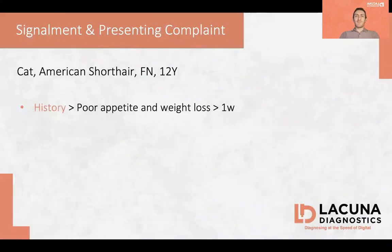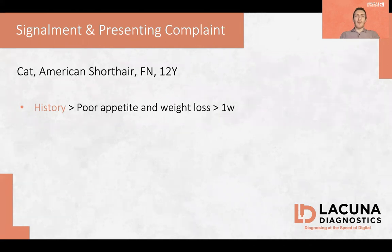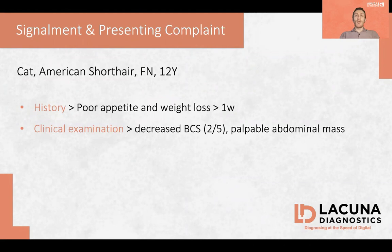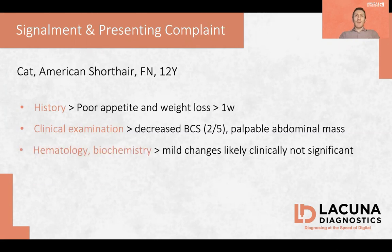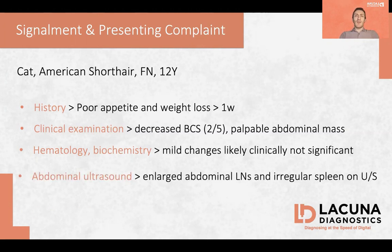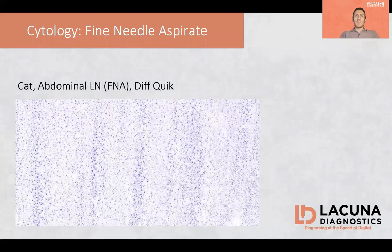This was a cat, American short hair, female neutered, 12 years old, that was referred to the veterinarian for an over-week history of poor appetite and weight loss. On clinical examination, the vet noticed a decreased body condition score and the presence of a palpable abdominal mass. Hematology and biochemistry were essentially unremarkable, but as part of the diagnostic investigation, the vet performed an abdominal ultrasound and identified enlarged abdominal lymph nodes and an irregular spleen. Both organs were sampled for cytology, and the smears were digitalized and submitted to my attention.